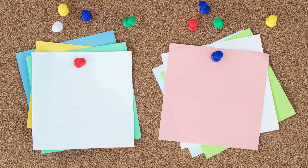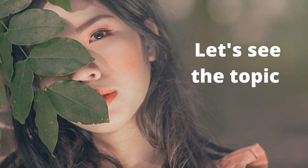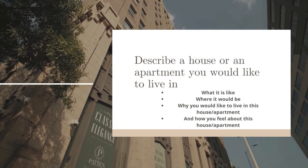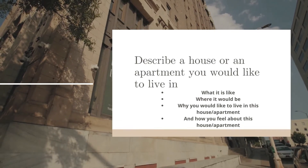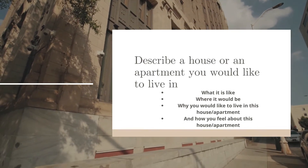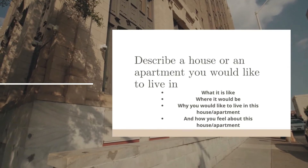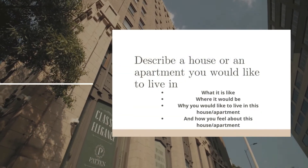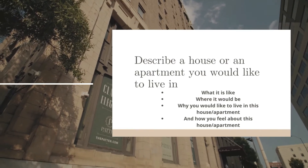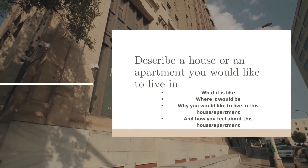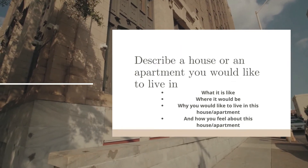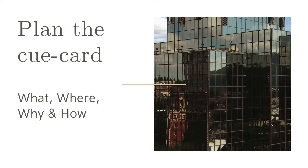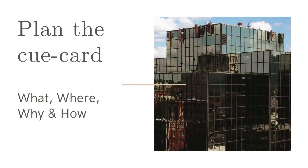Now let's see today's topic. The topic is: describe a house or an apartment you would like to live in — what it is like, where it would be, why you would like to live in this house or apartment, and how you feel about this house or apartment.